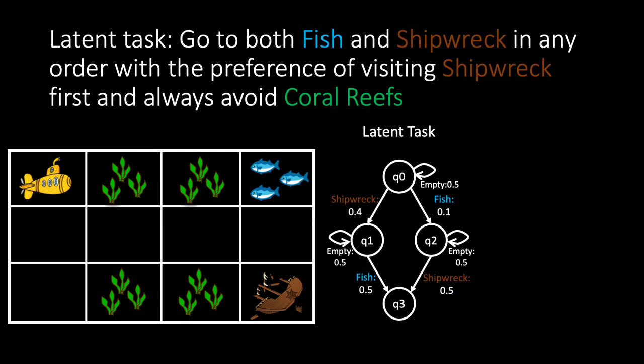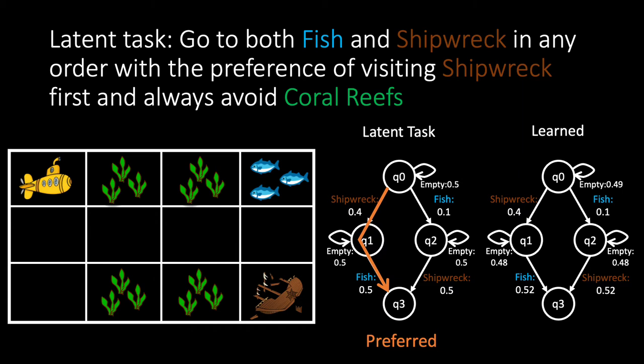It is preferred to visit shipwreck first and then fish. We sample a thousand traces and run our method and got this automaton on the right. We can observe that the structure is exactly the same and the probability looks very similar to the original PDFA.